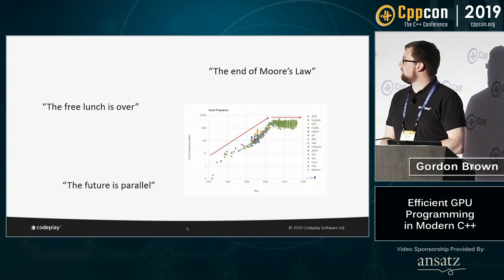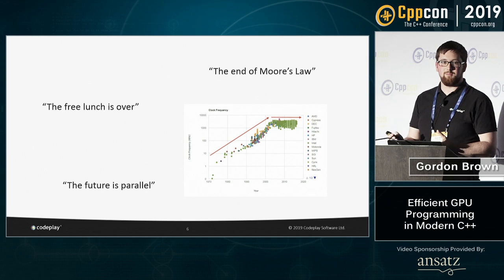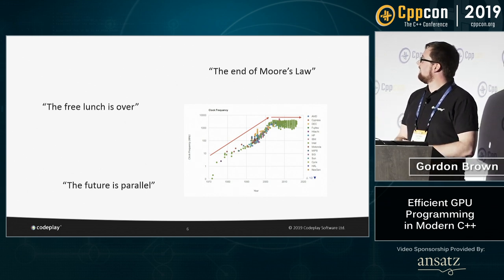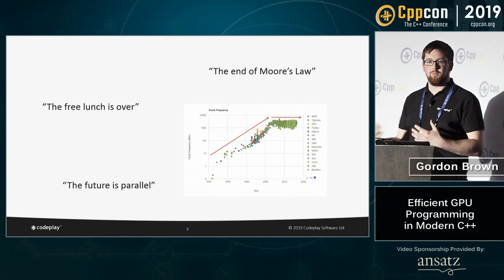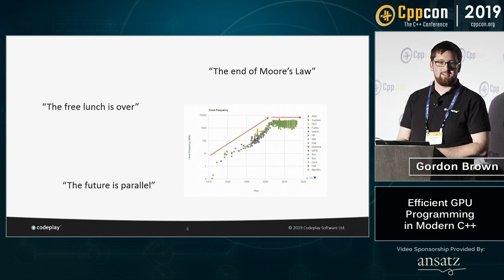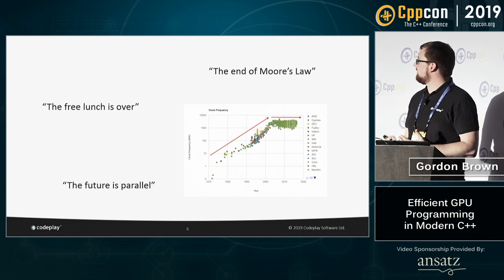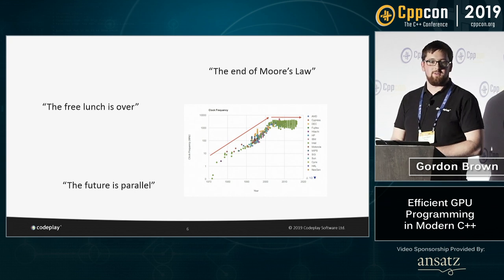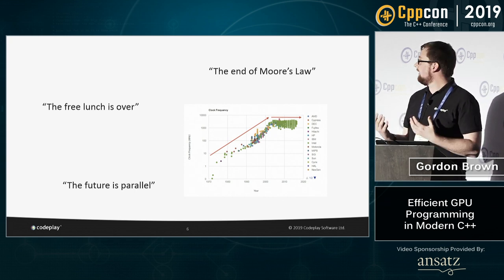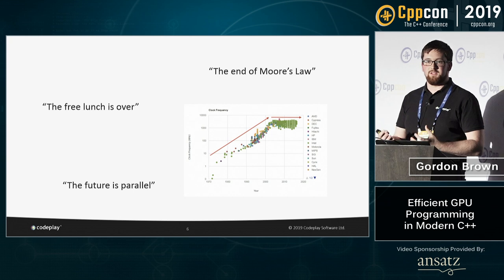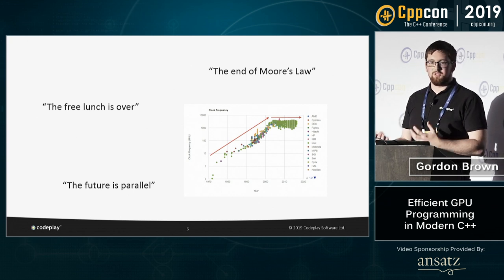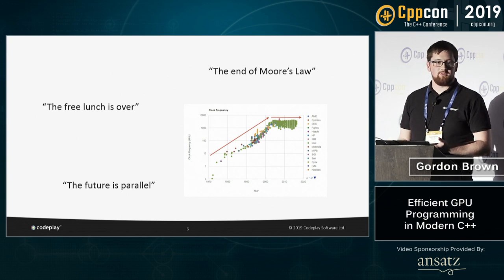So, why program the GPU? You've probably seen this graph a million times. This is effectively the end of Moore's law graph — in the past we could rely on CPUs gradually getting more performance from more transistors, but that's not the case anymore. Nowadays, it's accepted that future efficiency will have to come from heterogeneous parallelism: writing programs that take advantage of not just the CPU, but other devices like GPUs, DSPs, FPGAs, vision processors, and tensor processors.